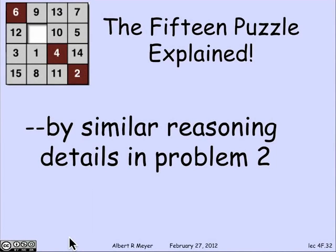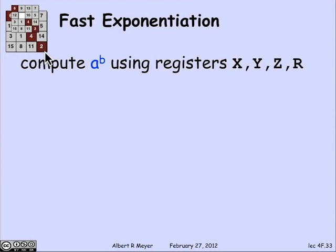The parity invariant of the diagonally moving robot will set us up for an analysis of the 15-puzzle game — the logo we've had on every slide in 6.042, with '6 blank 42' on the diagonal. This is a game where numbered tiles slide into the blank square, and the question is how to get from one permutation of the numbers to another. That analysis depends on a parity invariant slightly more sophisticated than the diagonally moving robot. Let's look at one more example: using the invariant to verify the fast exponentiation algorithm.